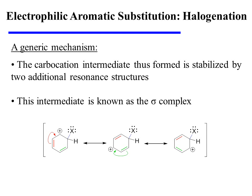The carbocation intermediate formed by this step of the mechanism is stabilized by two additional resonance structures. The red pi-bonding electrons can be moved over one bond, delocalizing the plus charge to a new location on the ring. The green pi-bond can also be moved over one bond to delocalize the plus charge to yet another position on the ring.